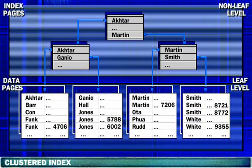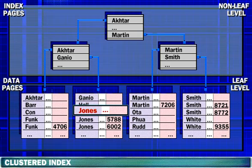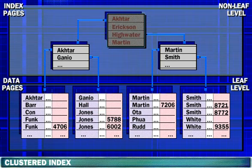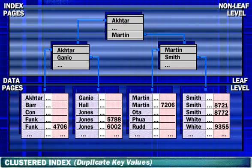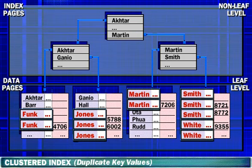In a clustered index, the leaf level is the actual data page. For a table with a clustered index, data is physically stored on a data page in ascending order. The order of the values in the index pages is also ascending. SQL Server internally maintains uniqueness of key values for a clustered index, even if the column data is not unique.